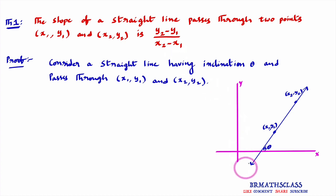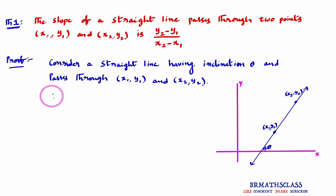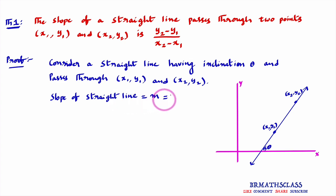Since the inclination of this straight line is theta, we can write the slope from the definition of slope of a straight line: if theta is the inclination of a straight line, then slope m is equal to tan theta. This we know from the definition of slope of a straight line.